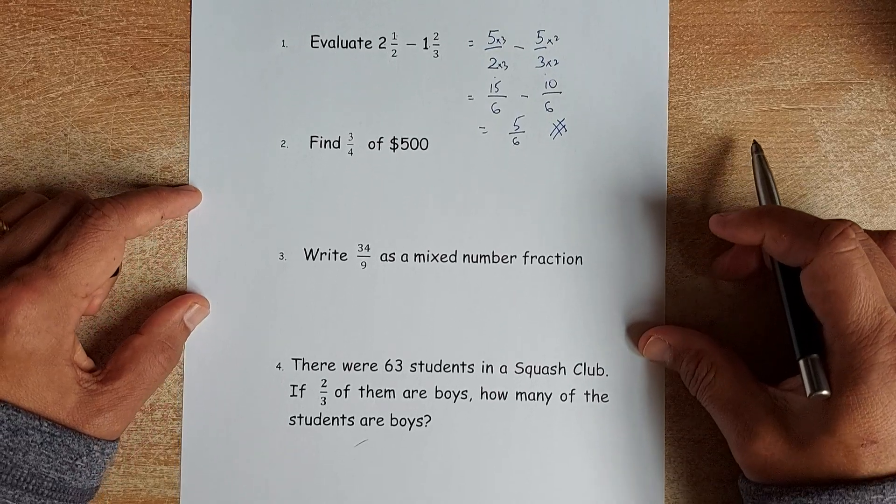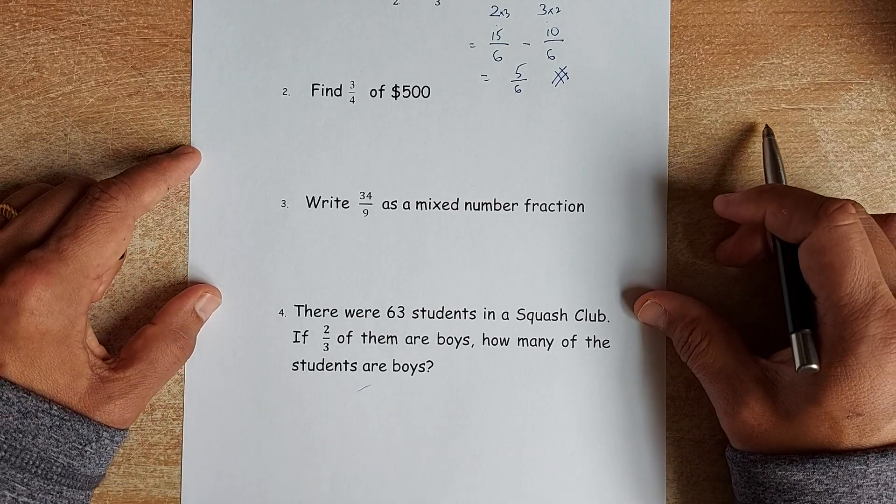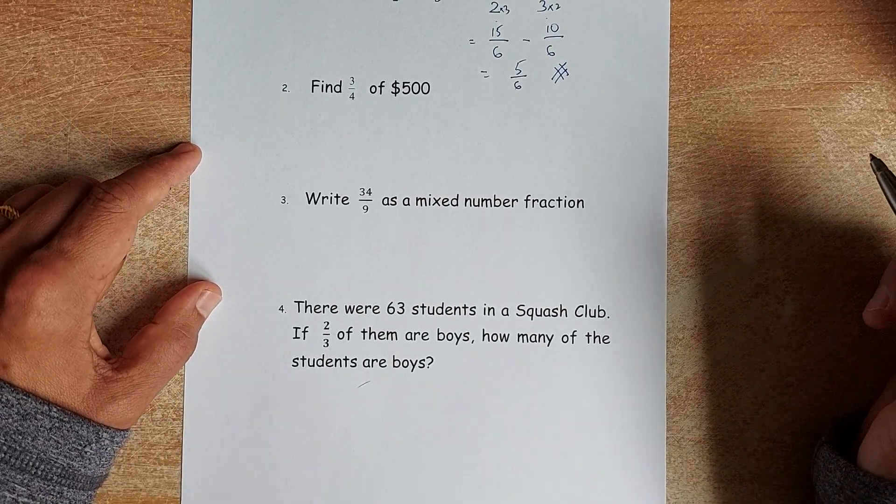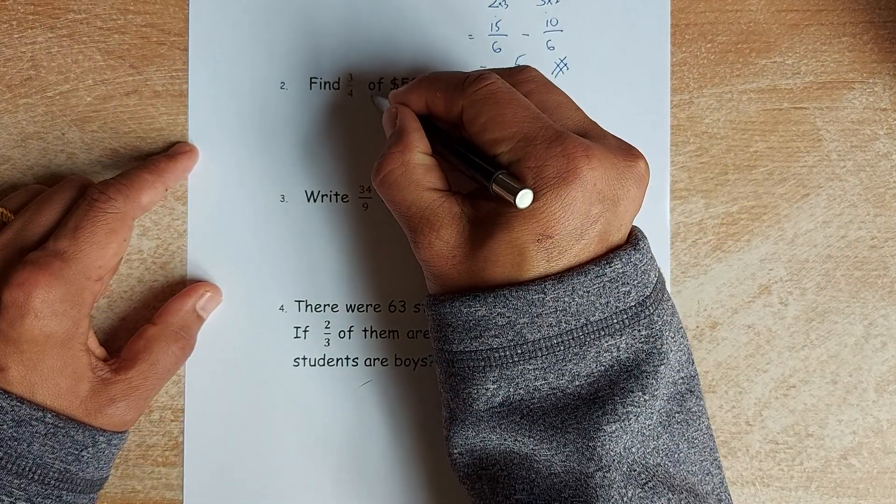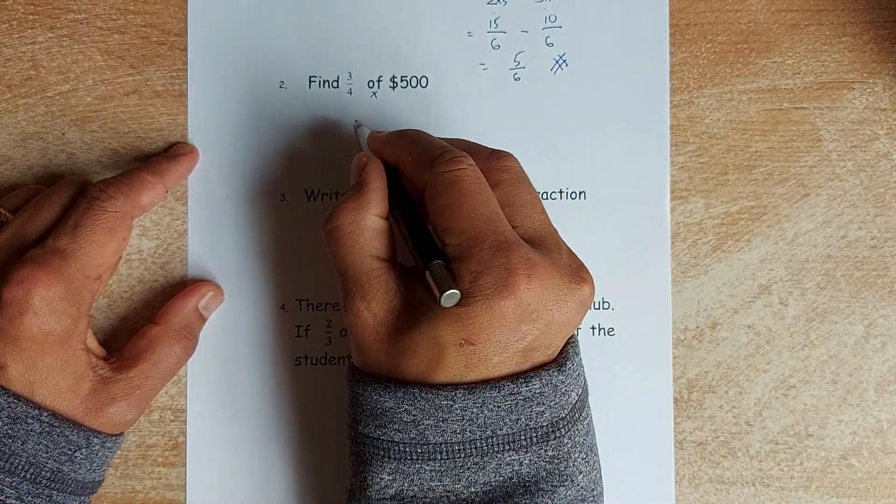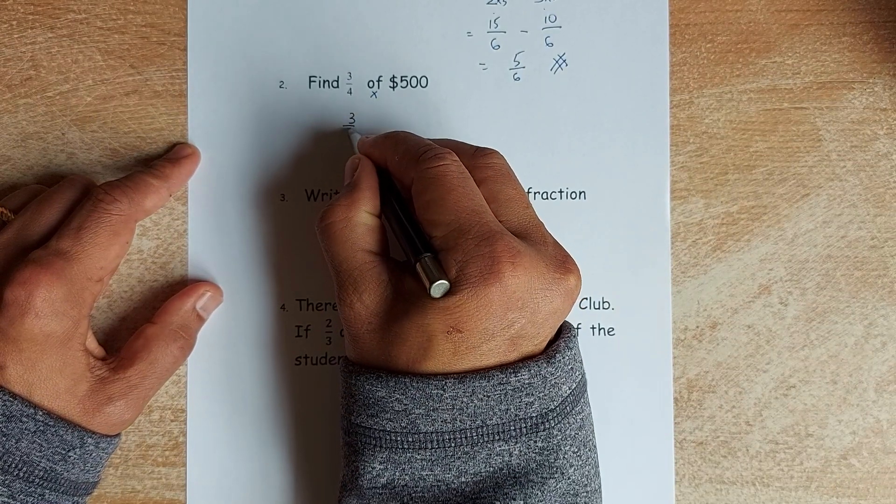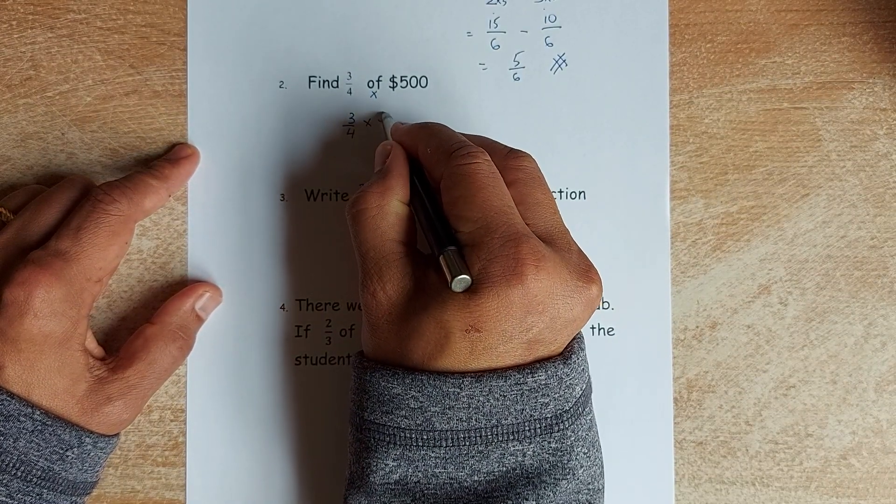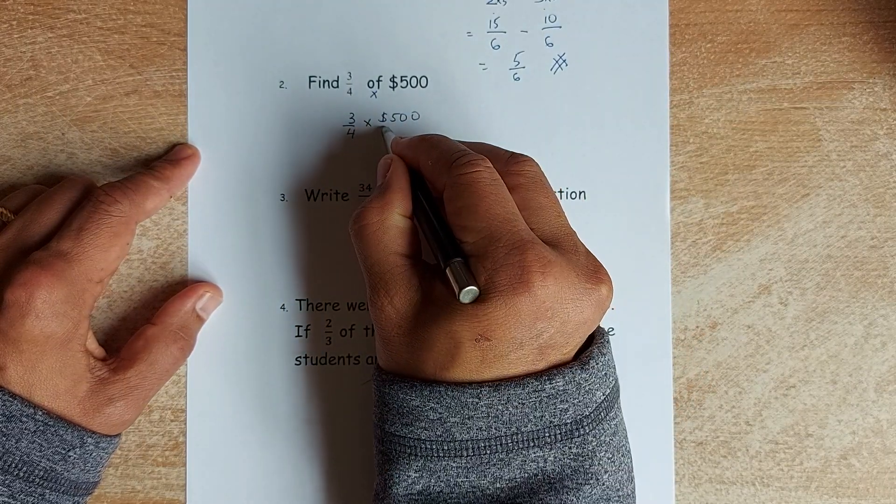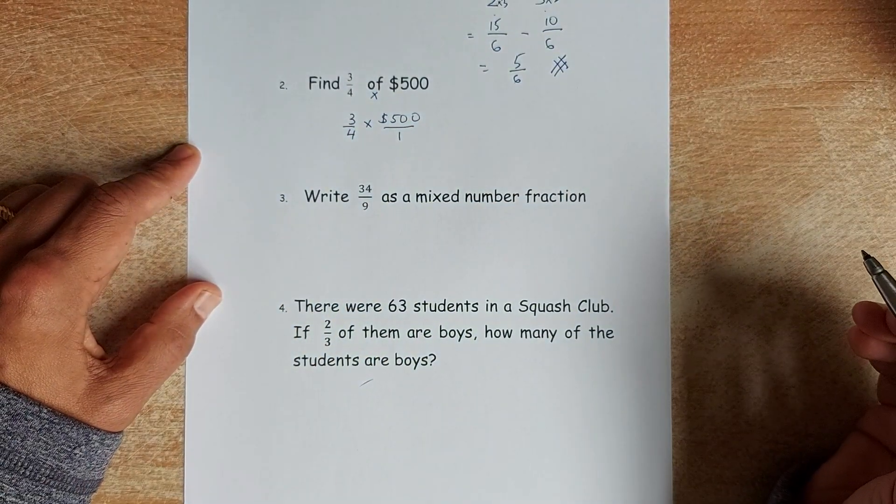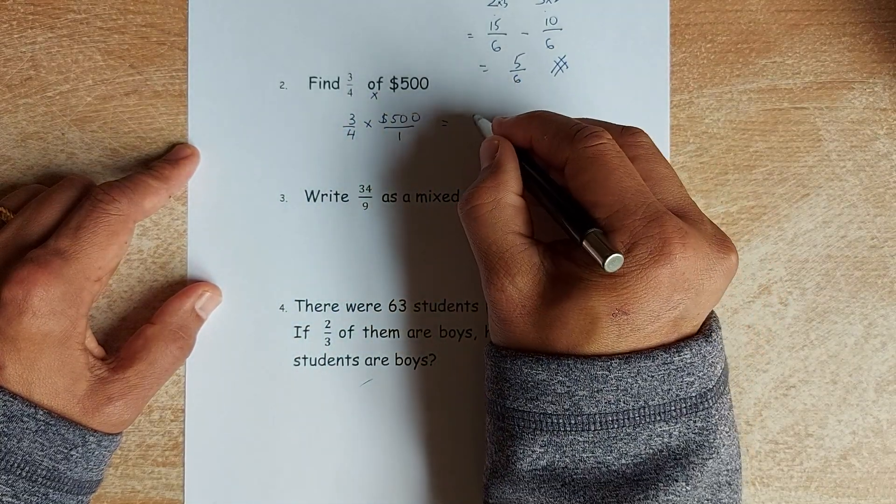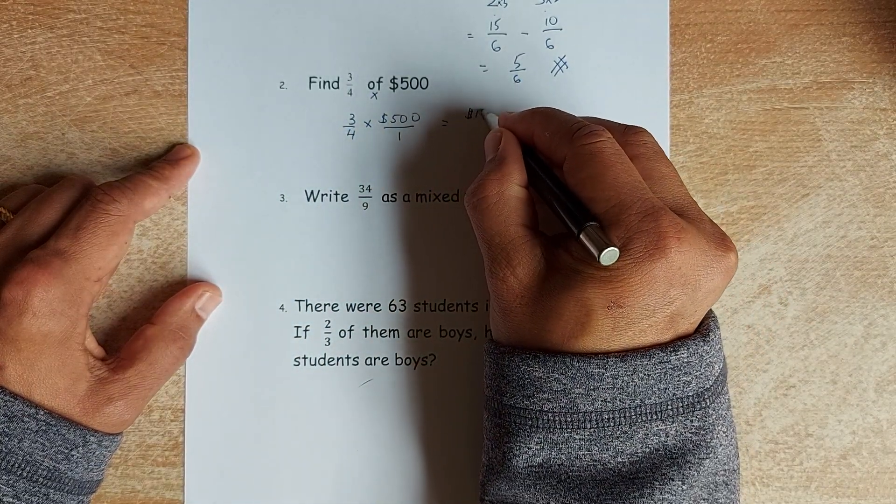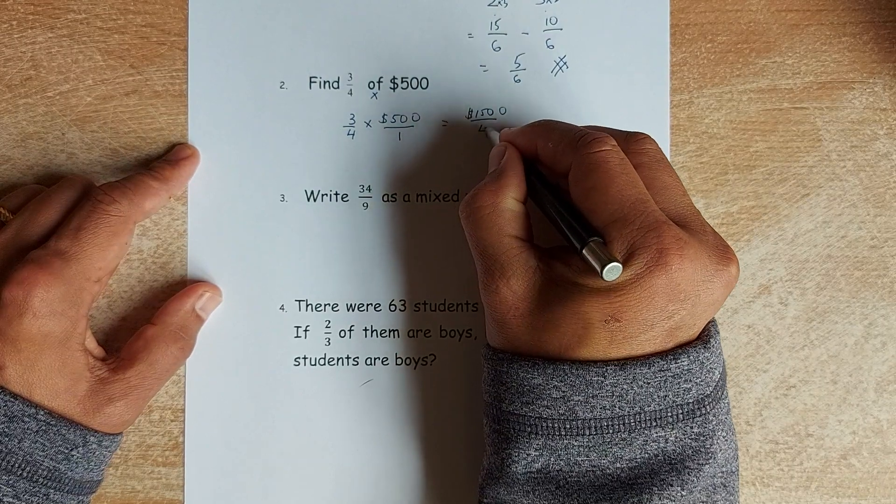Now, we shall proceed to question 2. Question 2 is find 3 quarter of $500. In mathematics, the of means you multiply. So it means that 3 quarter multiplied by $500. Or in other words, you can say 500 divided by 1. So what you do, you multiply 3 by 500 is going to be 1,500 divided by 4.